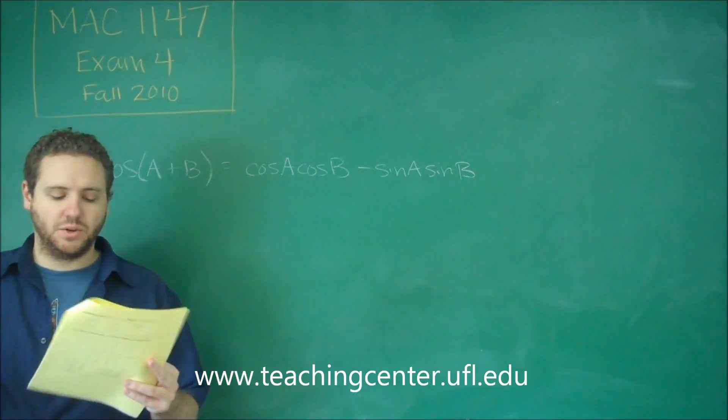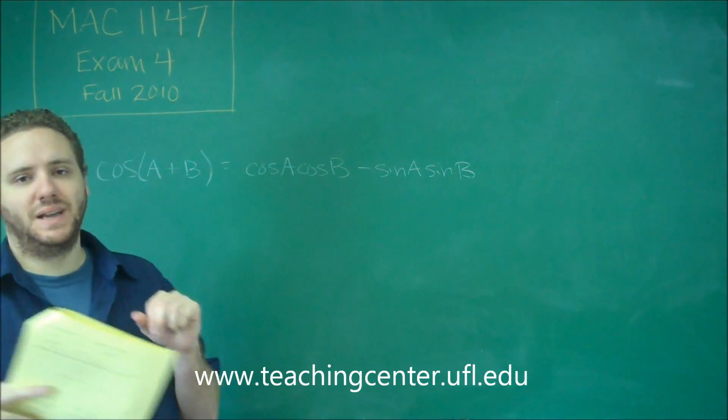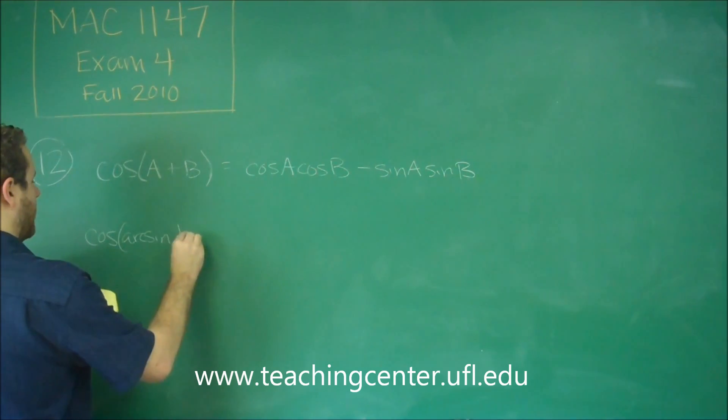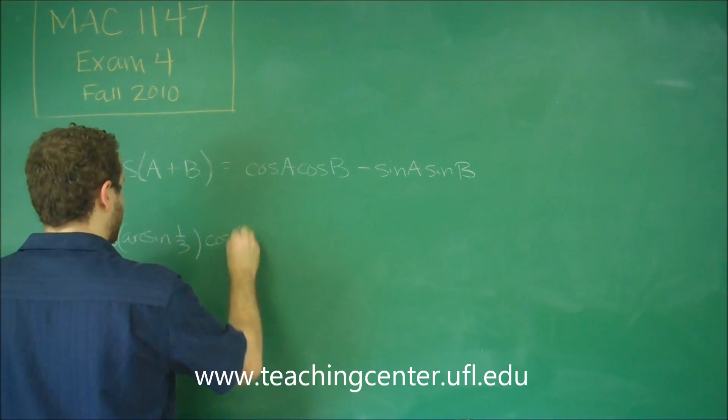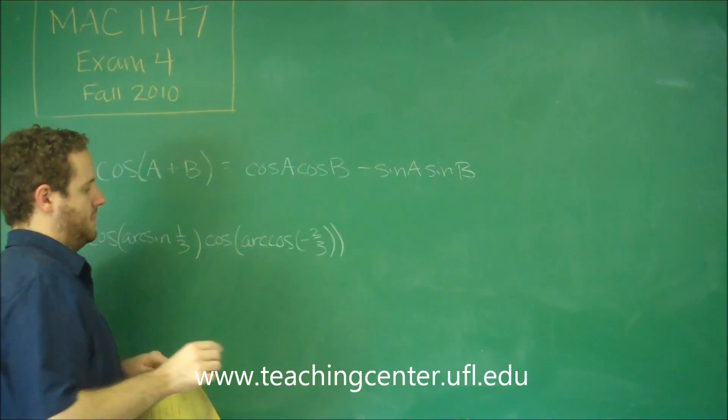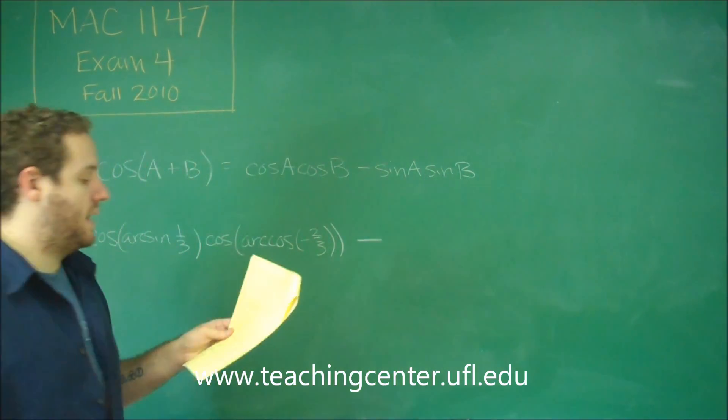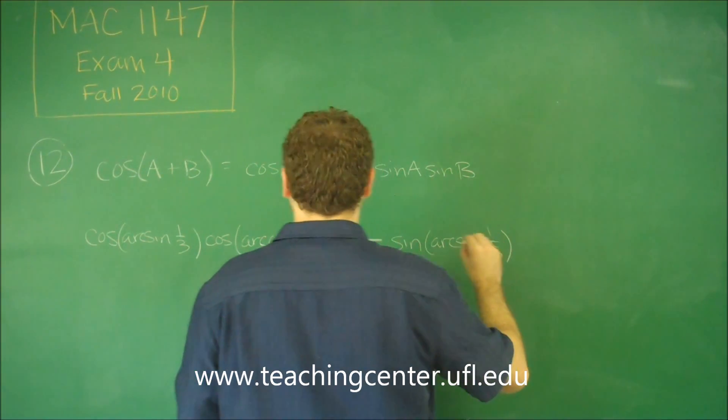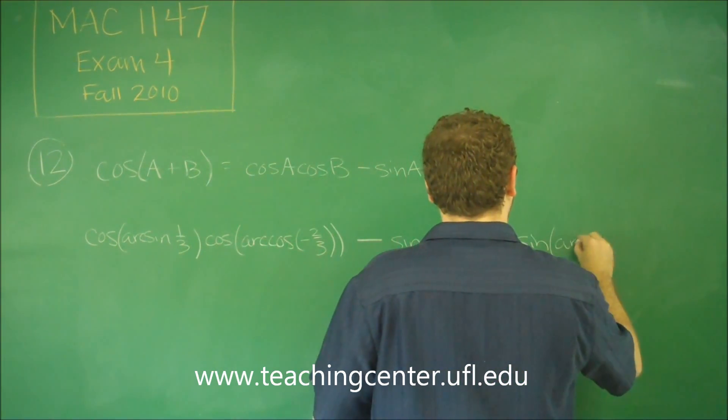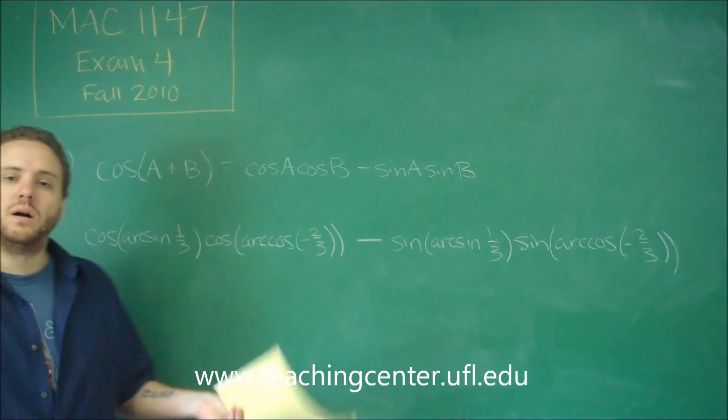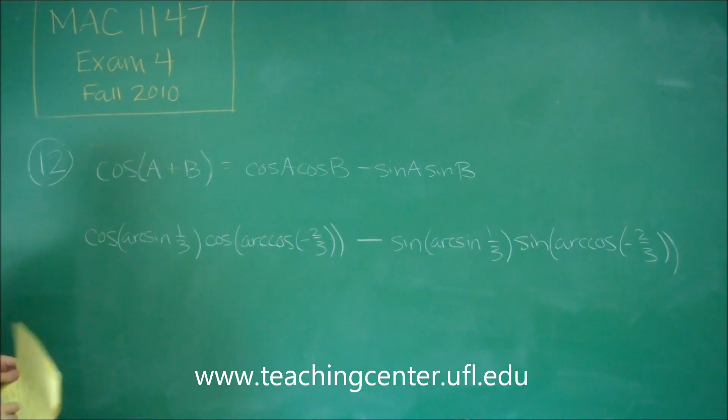Our A and B in this function are a little bit more complex. They're arc sine of one-third and arc cosine of negative two-thirds. So when we plug this in, we're going to get cosine of arc sine one-third times cosine of arc cosine of negative two-thirds, minus sine of arc sine one-third, sine arc cosine negative two-thirds. If we evaluate all four of those and then do this operation to multiply these and subtract them, we'll get our answer. So first let's try to figure out what all these are.